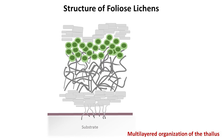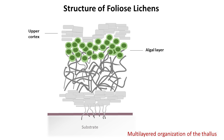This type of lichen has a multilayered organization of the thallus: a protective upper cortex, a photobiont layer, a medulla which consists of fungal hyphae, and a lower cortex with structures for attachment called rhizines.